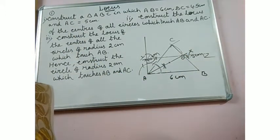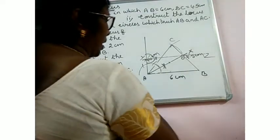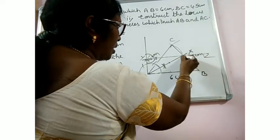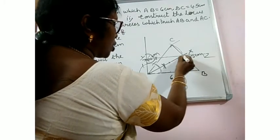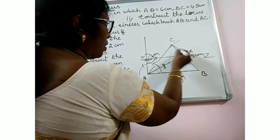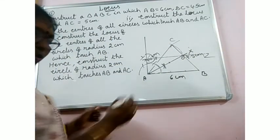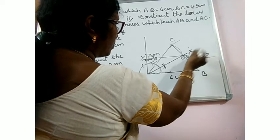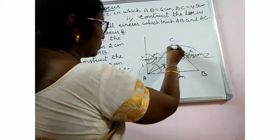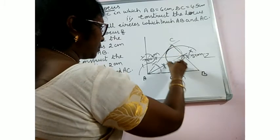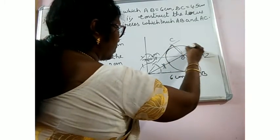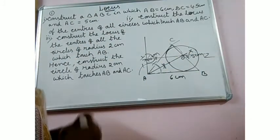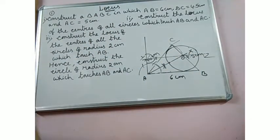We take O as the center of the circle and with 2cm as radius, we construct the circle. It will touch AB and AC because the perpendicular from O meets AB and AC. More or less you will be getting the required circle. This is the required circle. I hope this is clear to you.